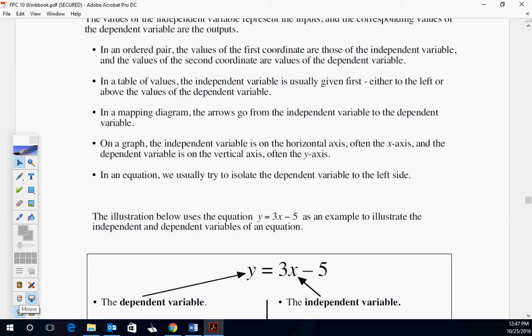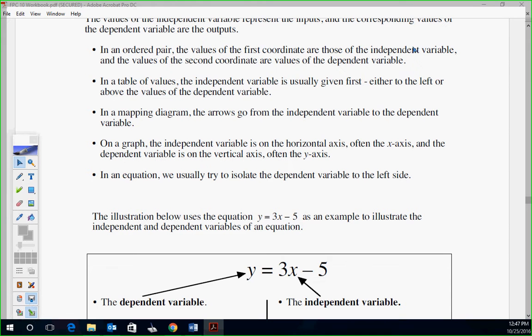In an ordered pair, the values of the first coordinate are independent. The values of the second coordinate are dependent. We're going to label these as X and Y. Just get used to it. Independent is your X. Dependent is your Y. In a table of values, the independent variable is usually given first, the left. In a mapping diagram, the arrows go from the independent X to the dependent variable Y. On a graph, the independent variable is on the horizontal axis, X, often the X axis. And the dependent variable Y is on the Y axis.